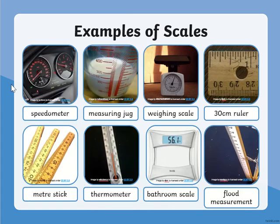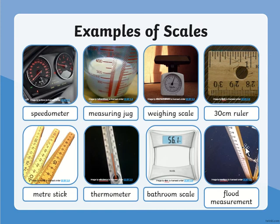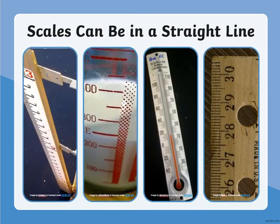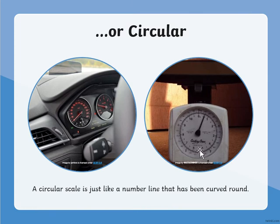Here are some different examples of scales. You could have one in your car that measures the speed you're going, a measuring jug that measures liters and milliliters, a weighing scale that measures in grams and kilograms, a ruler that measures in millimeters and centimeters, or a thermometer that measures temperature. Scales can be in a straight line or they can also be circular.